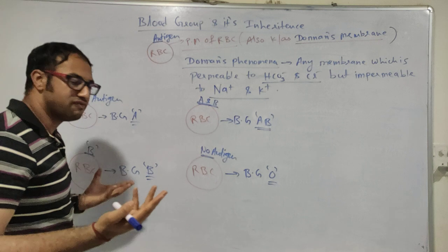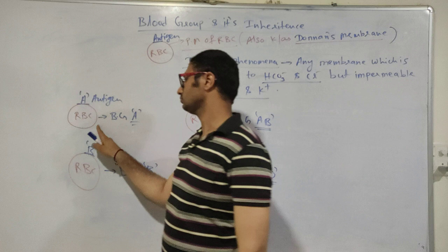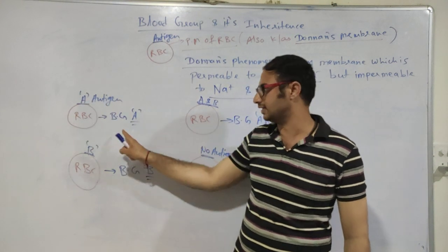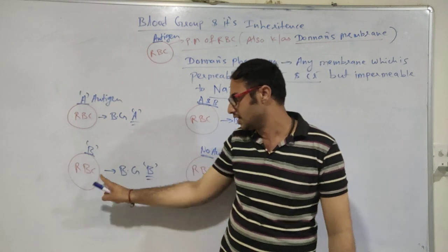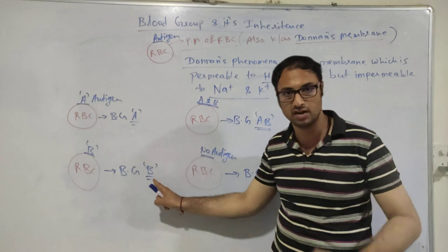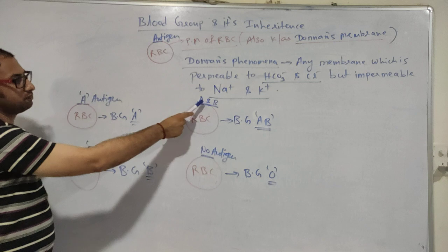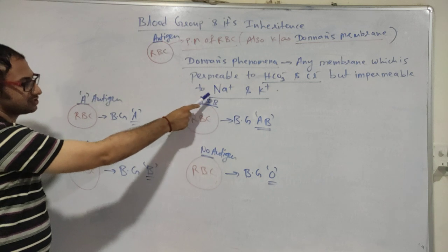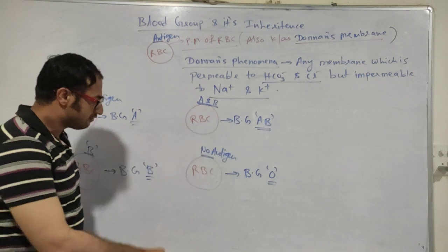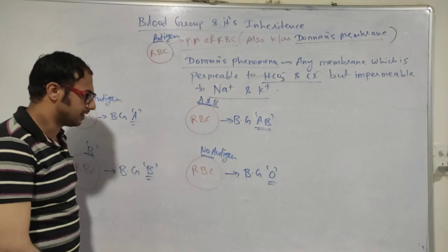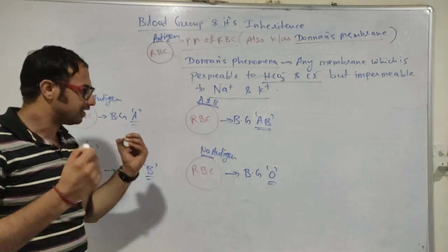Now, coming back to how to identify the blood group: if antigen A is present on the surface of RBC, then the blood group of that person is A. If antigen B is present, then the blood group is B. If both antigen A and antigen B are present, then the blood group is AB. If no antigen is present on the surface of RBC, then the blood group is O. This is how we can identify the blood group of a person.